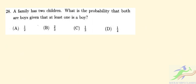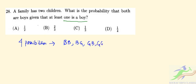Question number 28 says: a family has two children. What is the probability that both are boys, given that at least one is a boy? There are four possibilities: boy-boy, boy-girl, girl-boy, and girl-girl.